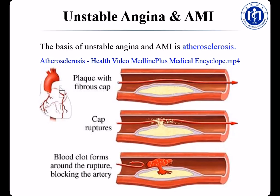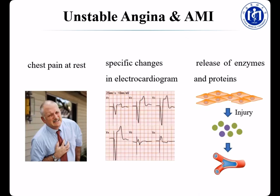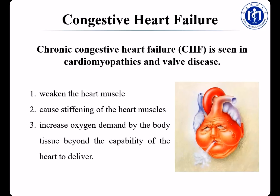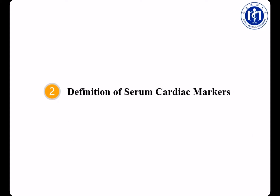From the video, we can see that the first change in these two diseases is the development of a plaque in the artery wall. The plaques consist of cholesterol and lipids together with inflammatory cells. The majority of plaques do not cause problems. However, if the plaque grows and reduces the diameter of the artery by more than 70%, it can significantly reduce blood flow. If the plaque with fibrous cap ruptures, a blood clot forms and the artery is blocked. Rupture of the plaque leads to the onset of unstable angina, which immediately precedes AMI. Both unstable angina and AMI can produce chest pain at rest, lead to specific ECG changes, and cause release of enzymes and proteins into the blood. These enzymes and proteins are called serial cardiac markers, which are the main subject of today's lesson.